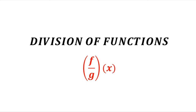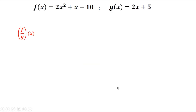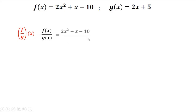Okay, so division of functions — f(x) over g(x). Given f(x) and g(x), find f(x) over g(x). Now f(x) is 2x squared plus x minus 10, and g(x) is 2x plus 5.